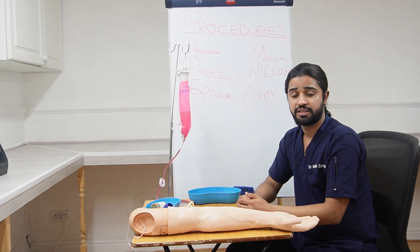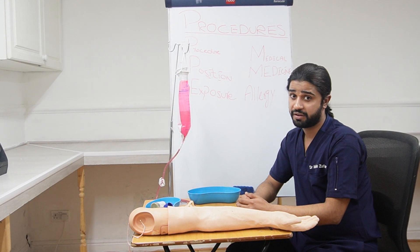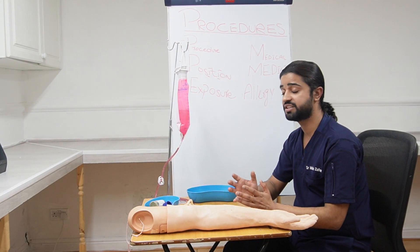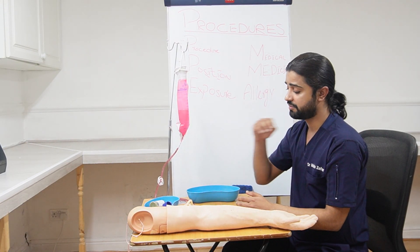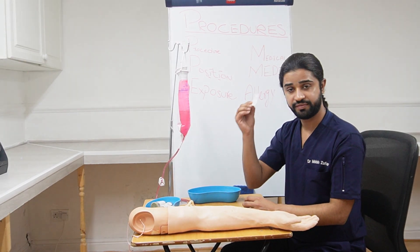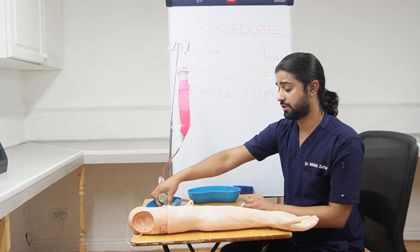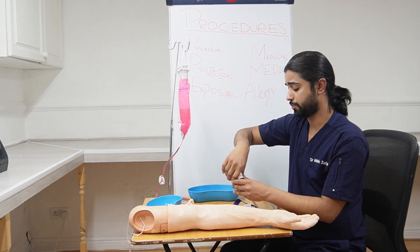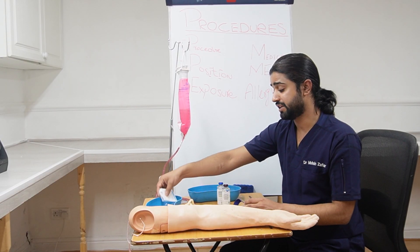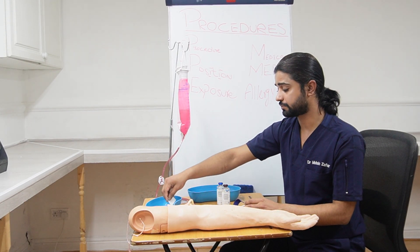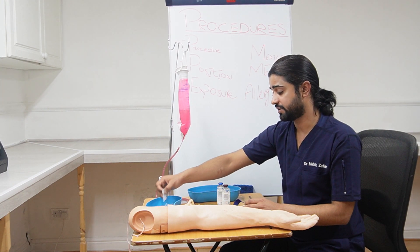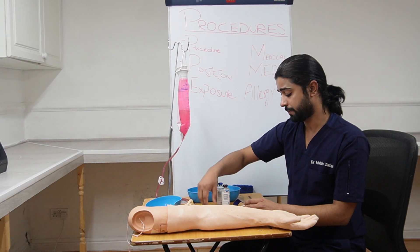Ask the patient to expose his forearm — if he has a full sleeve, ask him to roll up his sleeve. Ask if he has any arm soreness and if he has an arm preference. Then move to the table to collect your equipment. For a blood culture you need: a tourniquet, alcohol swabs, culture bottles, a needle, cotton, a plaster, and a vacutainer.